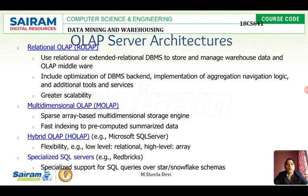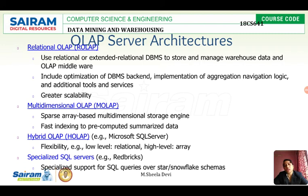The next topic is OLAP server architecture. There are three types: relational OLAP (ROLAP), multi-dimensional OLAP (MOLAP), and hybrid OLAP. ROLAP stores data in the form of relational tables, while MOLAP stores data in the form of multi-dimensional arrays. An advantage of ROLAP is that it can handle large volumes of data. MOLAP cannot store as much volume since data is in multi-dimensional array form.